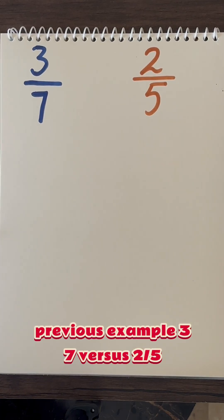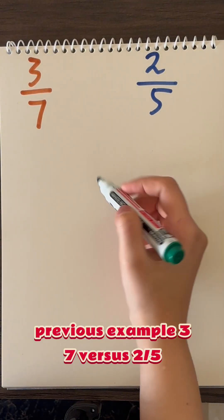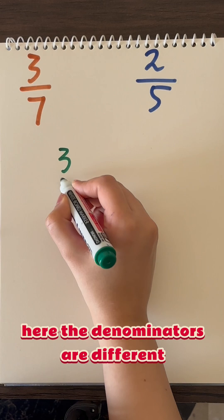So let's go back to our previous example, 3/7 versus 2/5. Here the denominators are different.